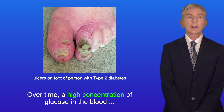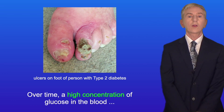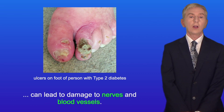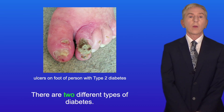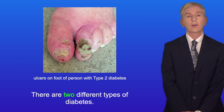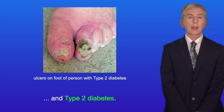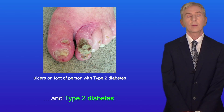Over time, a high concentration of glucose in the blood can lead to damage to nerves and blood vessels. There are two different types of diabetes, referred to as type 1 diabetes and type 2 diabetes.